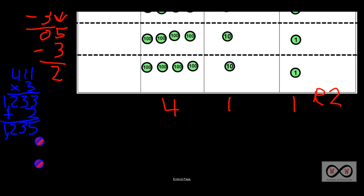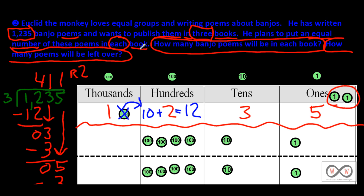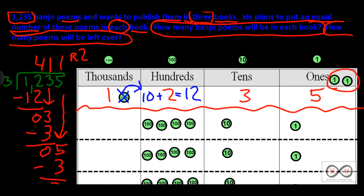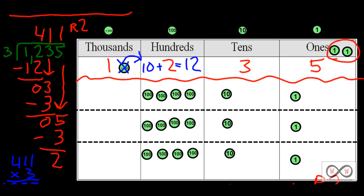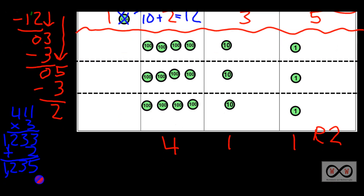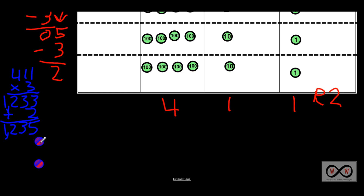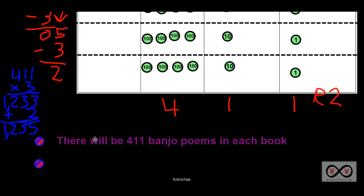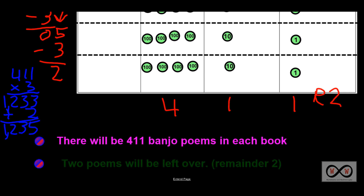Now we'll go back up to our math jobs and see if this all makes sense. How many banjo poems will be in each book? We'd have 411 poems in each book. And how many will be left over? Two. So now we'll put that in words. There will be 411 banjo poems in each book. And to answer the second math job: 2 poems will be left over. And there's our remainder of 2.